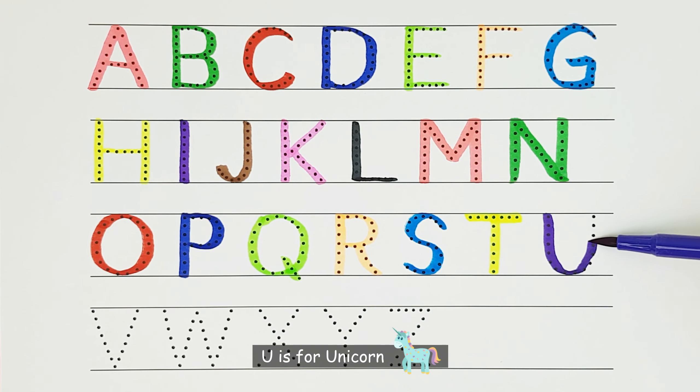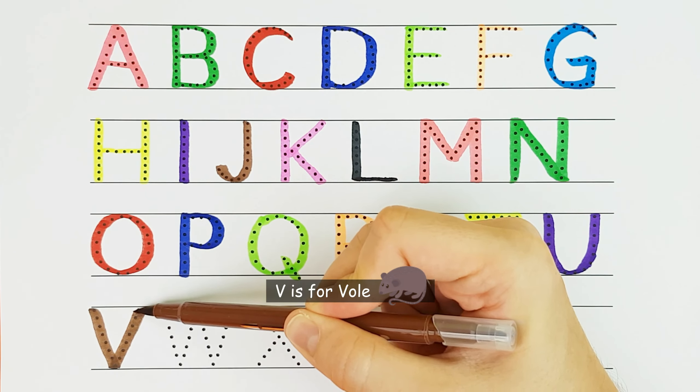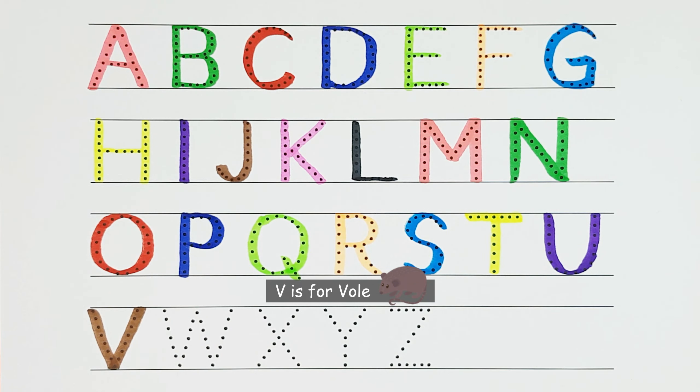U. U is for unicorn. U. V. V is for vole. V.